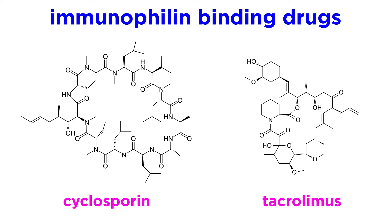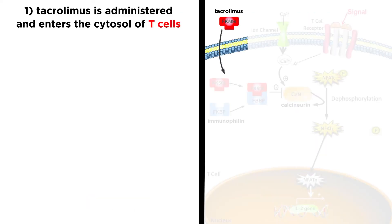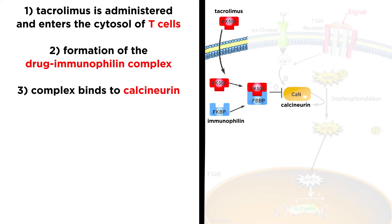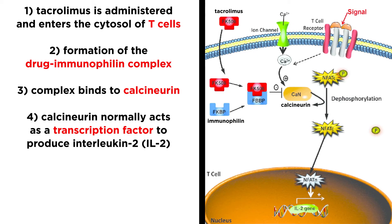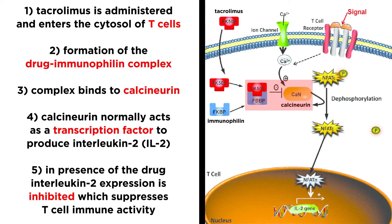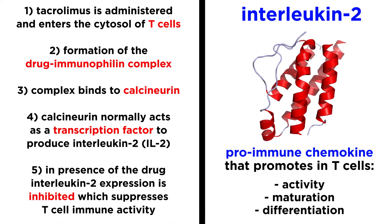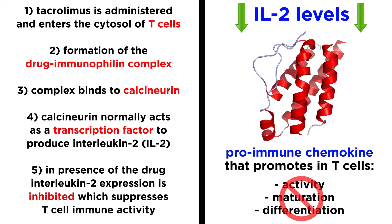In the context of immunosuppressants, immunophyllins act as the receptor for this class of drugs. Cyclosporin and tacrolimus are examples of immunophyllin-binding drugs. After administration, the drug enters the cytosol of T cells, where it binds with immunophyllin. Following drug-immunophyllin complex formation, the complex binds to another intracellular protein called calcineurin. In the absence of these drugs, calcineurin usually acts as a transcription factor to promote the production of interleukin-2. However, following immunophyllin-drug complex binding to calcineurin, the interleukin-2 transcription activity is inhibited. Since interleukin-2 is a pro-immune chemokine that increases the activity, maturation, and differentiation of T cells, reduction in its production predictably leads to immunosuppression.